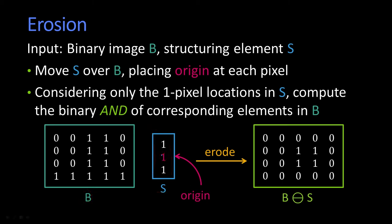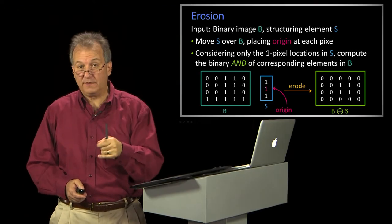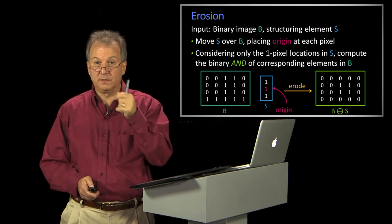The way erosion works is, I take my structuring element and I run it over the picture. What I'm going to do is take the AND of the ones in my structuring element with the pixels below it in the image. I take the AND.